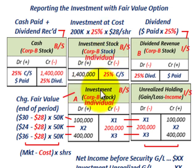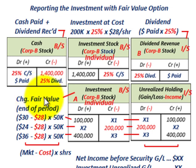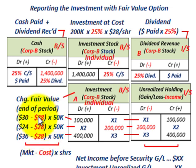Next we deal with the investment account, set up on an individual basis for Corp B's stock. This is the heart of the fair value option: what you're looking for is a change in fair value from each period, and you record that in the investment account at the end of each period. You take your cost basis — what we paid for that stock originally, $28 per share — and compare it to the market value for each reporting period.